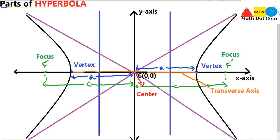The next part is the co-vertices of the hyperbola. Just like we have two vertices, similarly we have co-vertices. They lie on the conjugate axis, not on the transverse axis. Vertices and foci lie on the transverse axis, while co-vertices lie on the conjugate axis. The co-vertices are at a distance of 'b' from the center. You can also say the conjugate axis is the minor axis, and the transverse axis is the major axis.